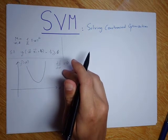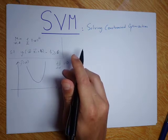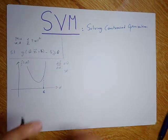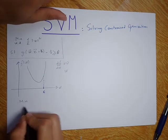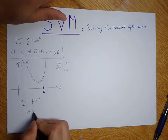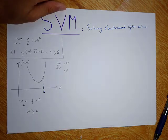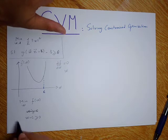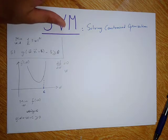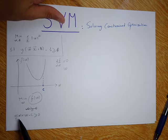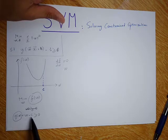Now I want to make it constrained, so I want my solutions to be higher or equal than some constant C. I can write this as W minus C is higher or equal than 0, and this is a function G(W) that represents the constraint. So we have F(W) that we want to minimize, and G(W) which says W minus C should be higher or equal than 0.